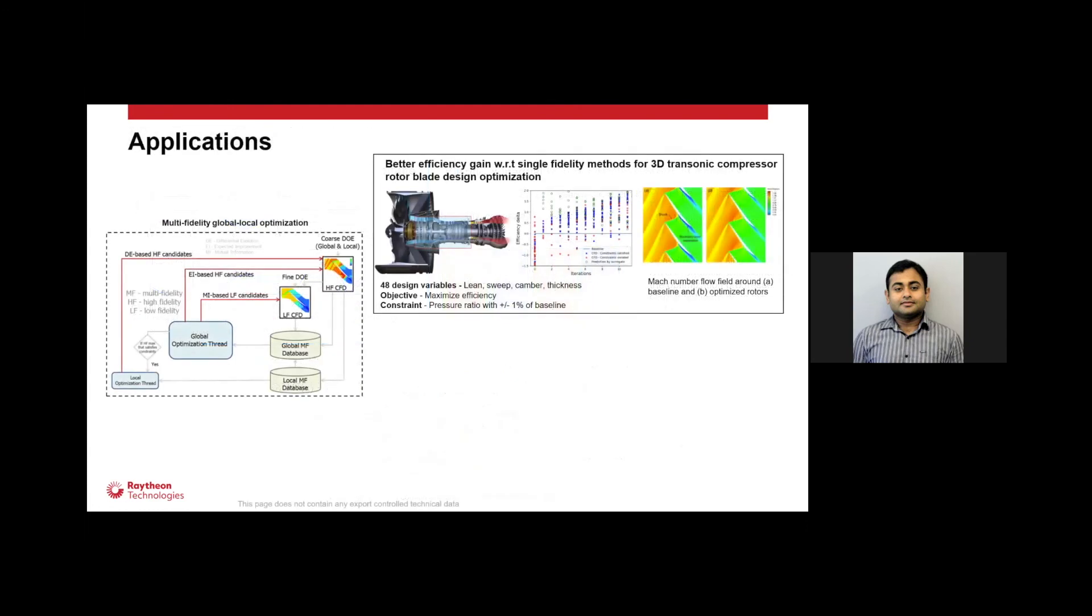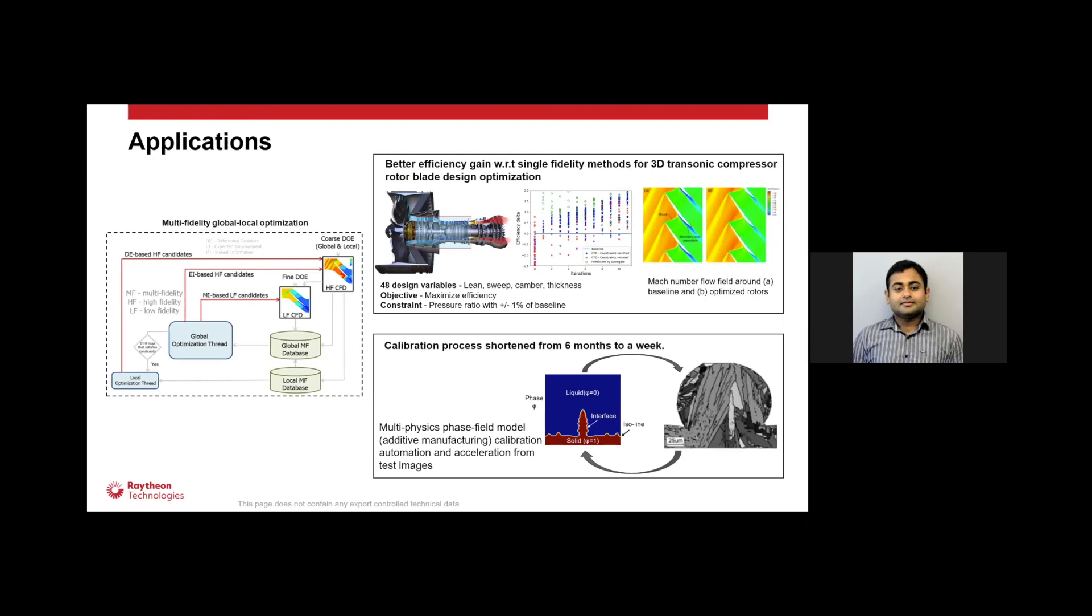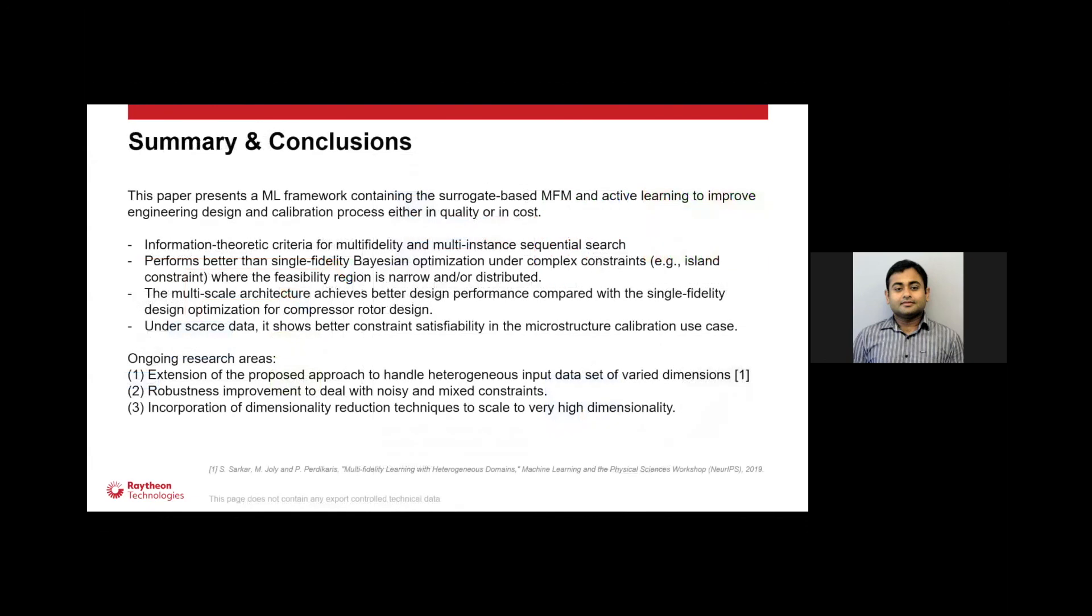We have applied all the sampling techniques into a global-local setting where we generally go through globally and find out different regions which are good in the design space, and then locally we hone in there. We can do very high-dimensional surrogate optimization much faster. For example, we applied it to compressor transonic rotor optimization with all the high fidelity models and low fidelity models, and we did much better optimization with respect to single fidelity cases at 50 design variables. Similarly, we applied it to multi-physics phase field model calibration, which generally takes months to calibrate from actual images. We did it much faster with multi-physics phase field model calibration.